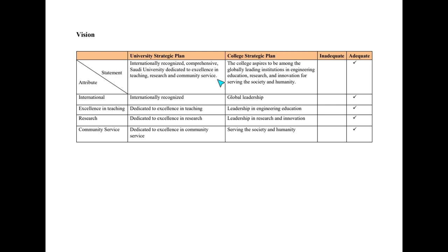Those three pillars — teaching, research, and community service — must be included in the vision to show where this organization wants to be in the future. From the vision statement, when you build the strategic plan, you develop attributes. For example, the word 'internationally' from the statement means you can be ranked internationally, attract students from around the world, or collaborate with other universities on joint programs.